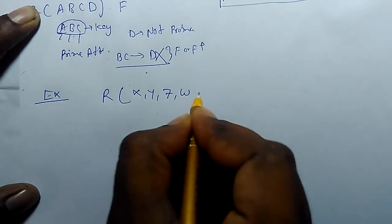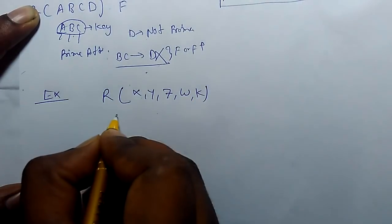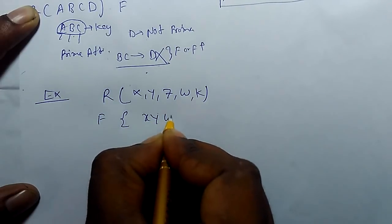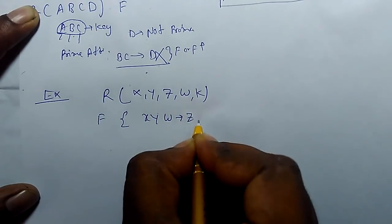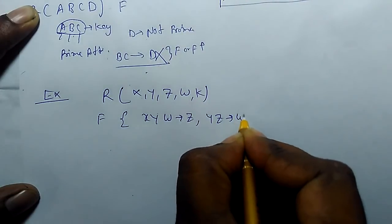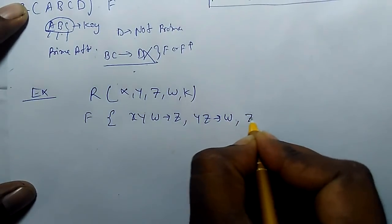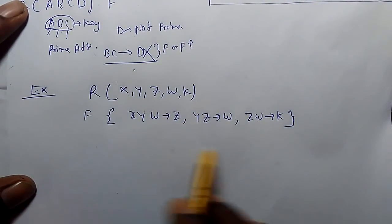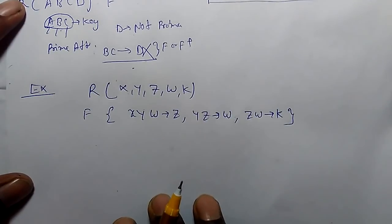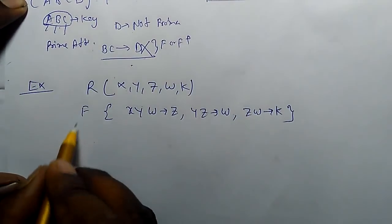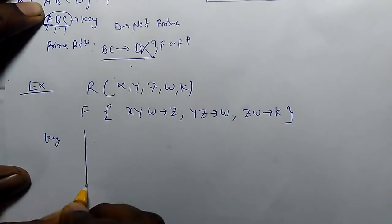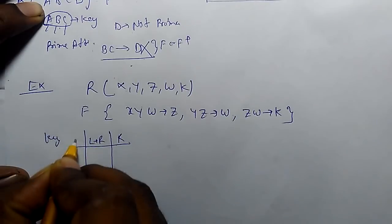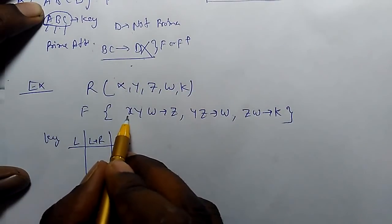Let's take an example. If R is a relation over attributes X, Y, Z, W, and K, and the functional dependencies are: XYW determines Z, YZ determines W, and ZW determines K. We need to check whether it is in 2NF or not. First, we have to find the key. To find the key, there is a method: look at attributes appearing only on the left side.